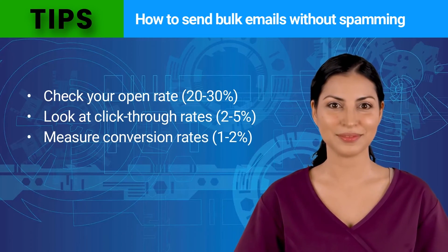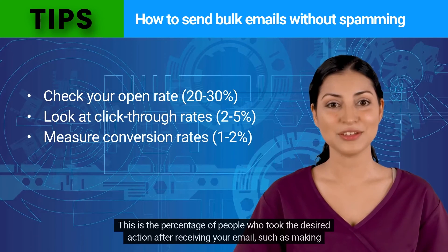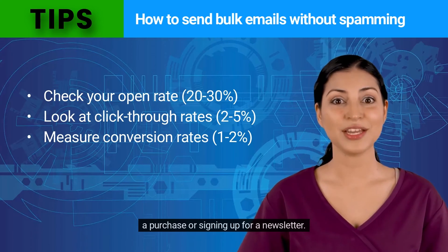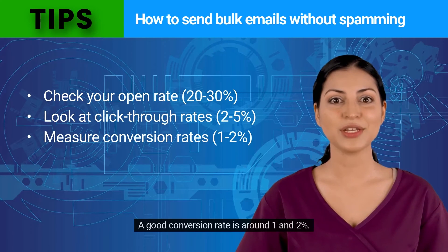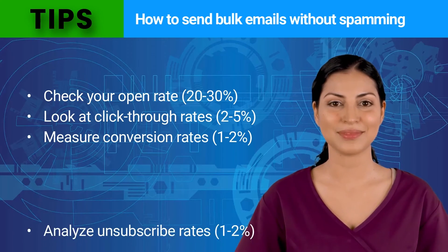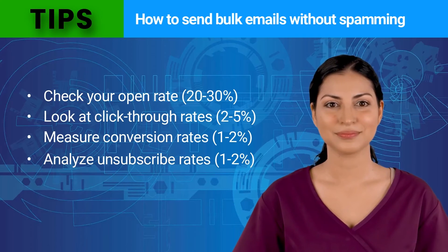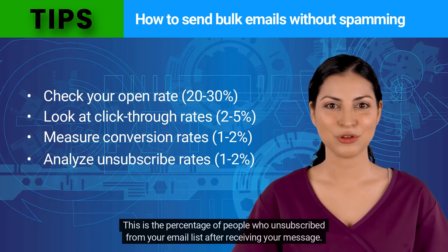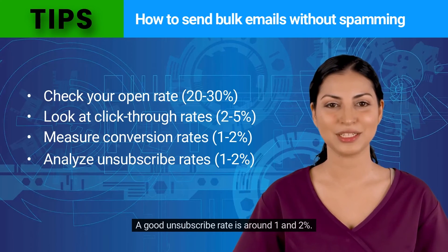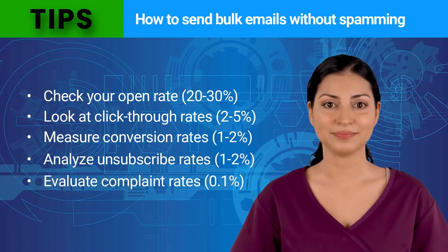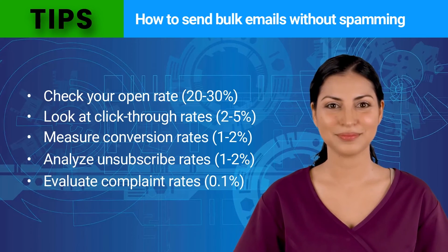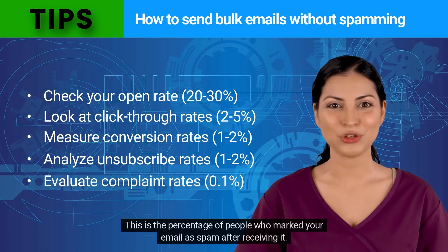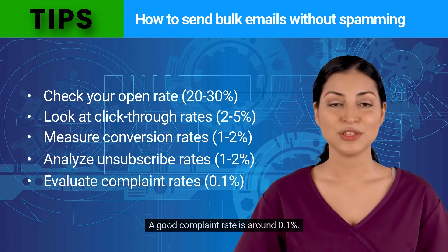Measure conversion rates — this is the percentage of people who took the desired action after receiving your email, such as making a purchase or signing up for a newsletter; a good conversion rate is around 1 to 2 percent. Analyze unsubscribe rates — this is the percentage of people who unsubscribed from your email list after receiving your message; a good unsubscribe rate is around 1 to 2 percent. Evaluate complaint rates — this is the percentage of people who marked your email as spam; a good complaint rate is around 0.1 percent.